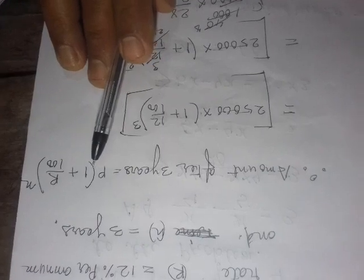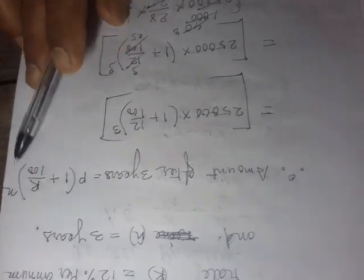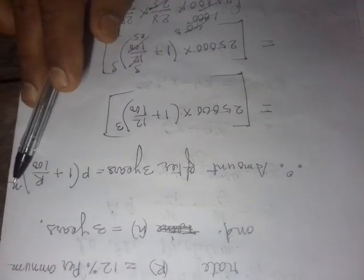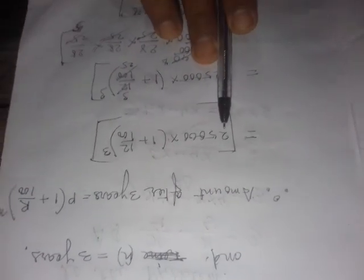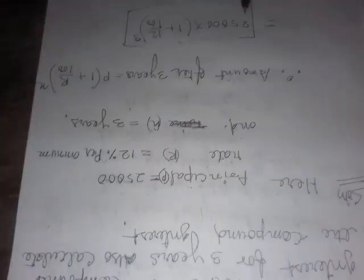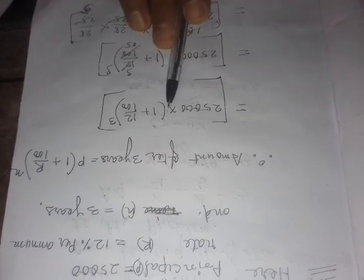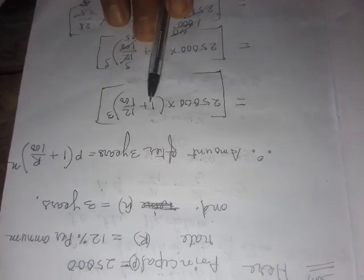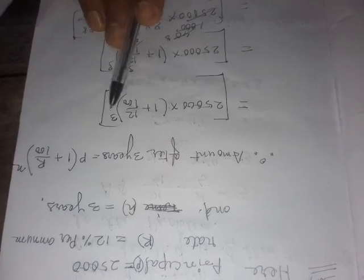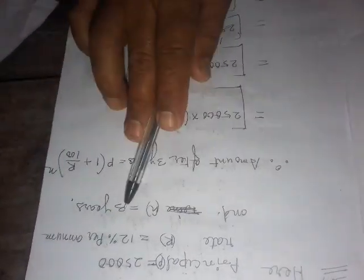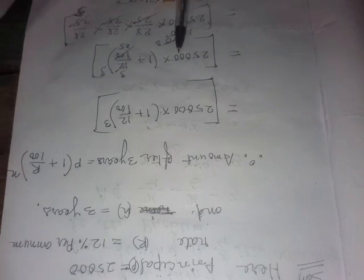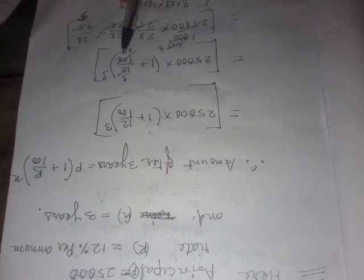According to the formula, the amount equals P into bracket 1 plus r by 100, bracket close, raised to n years. We replace P with 25,000 and r with 12, so it becomes 25,000 into 1 plus 12 by 100, raised to the power 3, because n is 3 years.